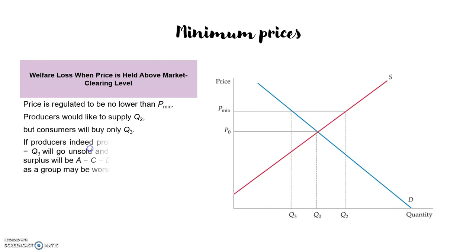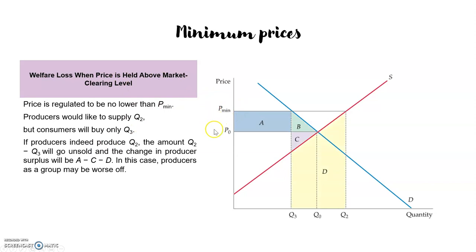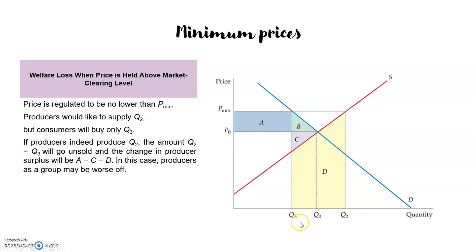In a price floor where the minimum price is set above the market clearing price, consumers will only buy q3, but the producers would like to supply q2 as the price has increased. If the producers decide to produce at q2, they will lose the difference between q2 and q1 as well. So they will not only lose area C but also area D if they decide to produce at q2, because only q3 will be bought by the consumers. They gain A but lose C and D if they produce at q2.